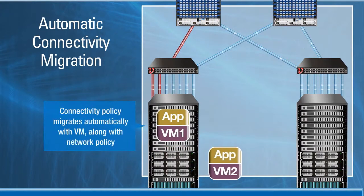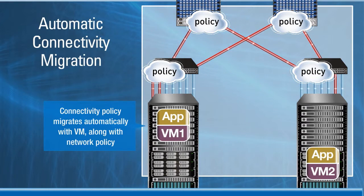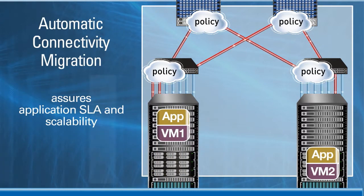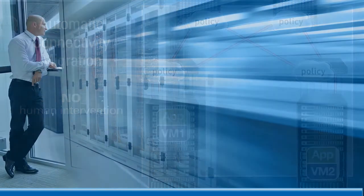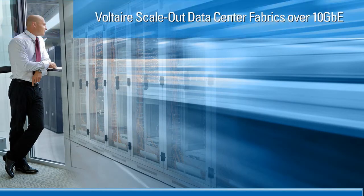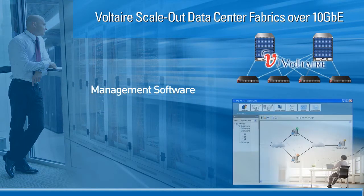It gets even better: when VMware vMotion process migration takes place within a rack or between racks, UFM ensures that connectivity policy migrates automatically with the virtual machine, together with its network policy. This assures application SLA and scalability at any location in the fabric with no human intervention.